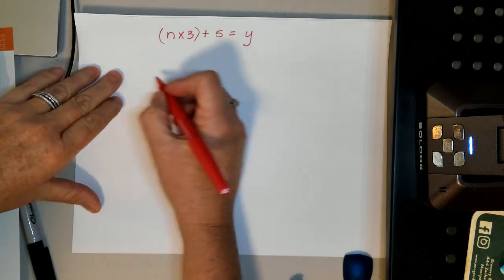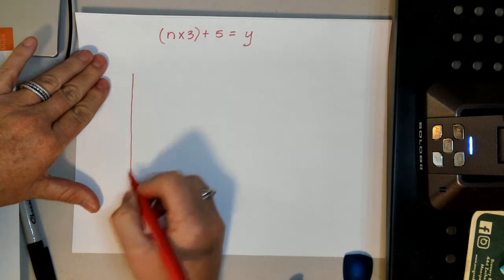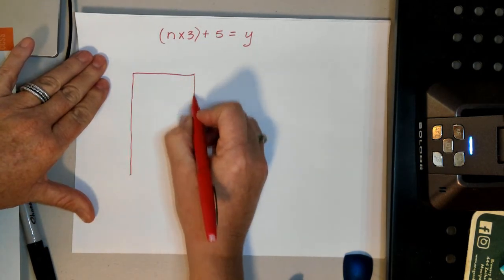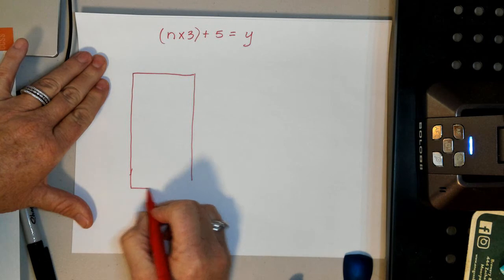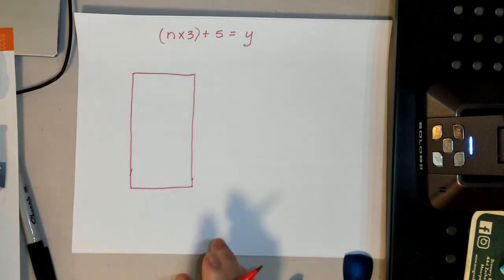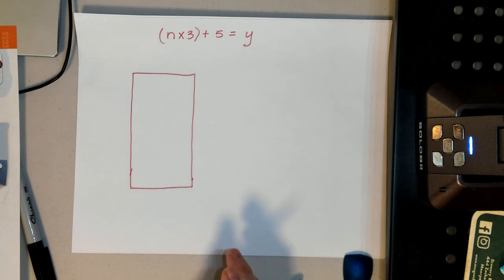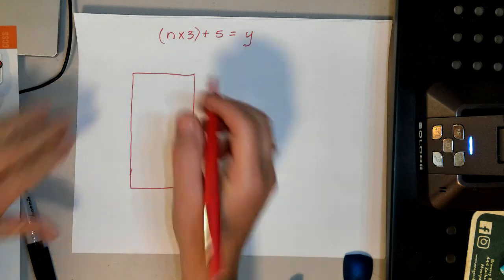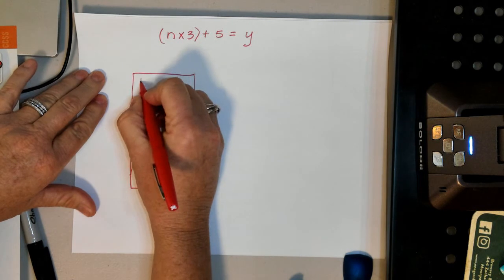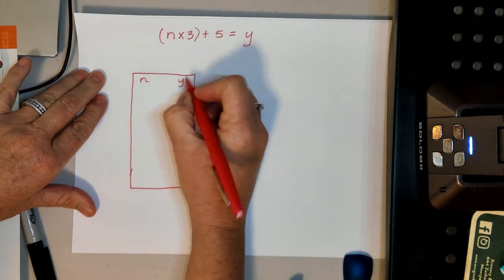So I'm going to go ahead and draw my table here. I don't want to confuse you. So when you're looking at this table, this could be n, and this will be y.